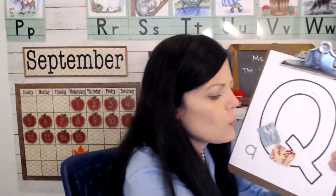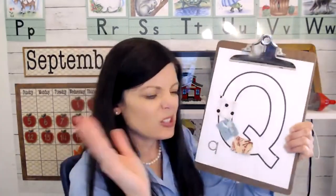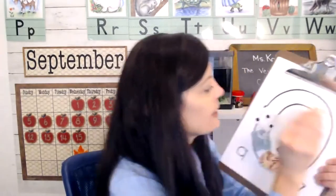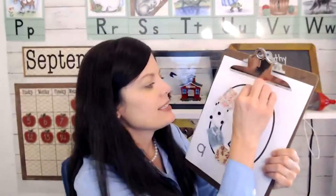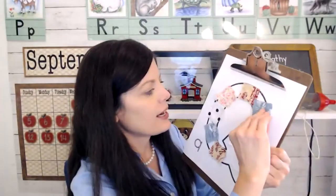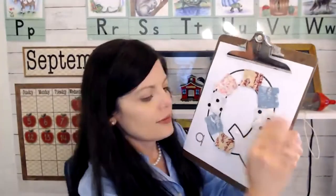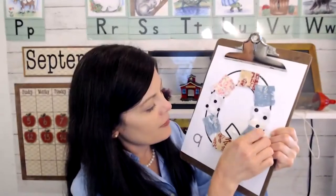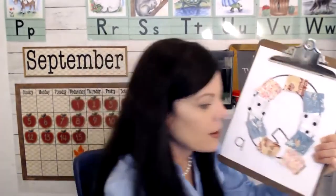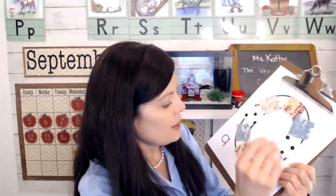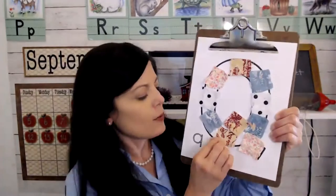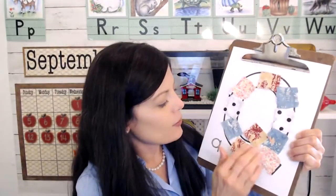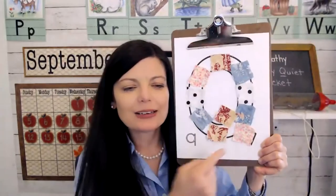Maybe you have an old t-shirt that has holes in it, and you can recycle it and use it to make your little letter Q today. You can decorate yours however you want to — this is just one idea. I think I need two more. Let's put one right there, and maybe I'll choose this one right there. Here you have it. We made a letter Q that kind of looks like a quilt.